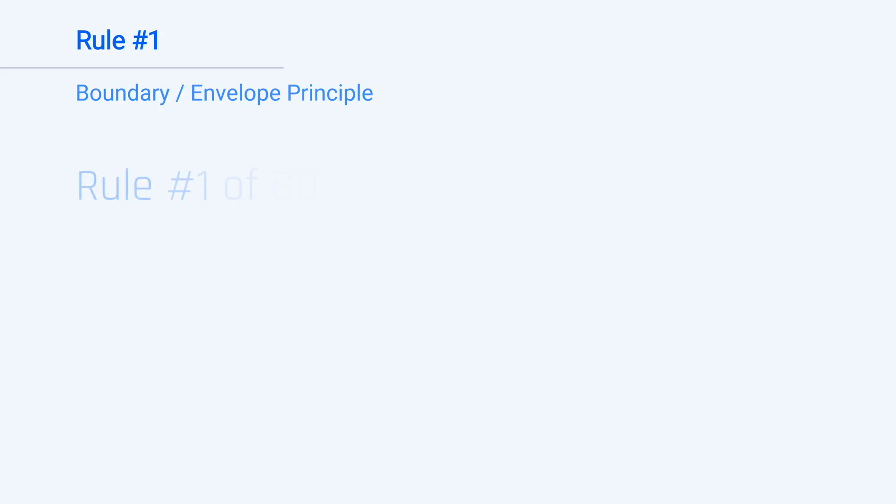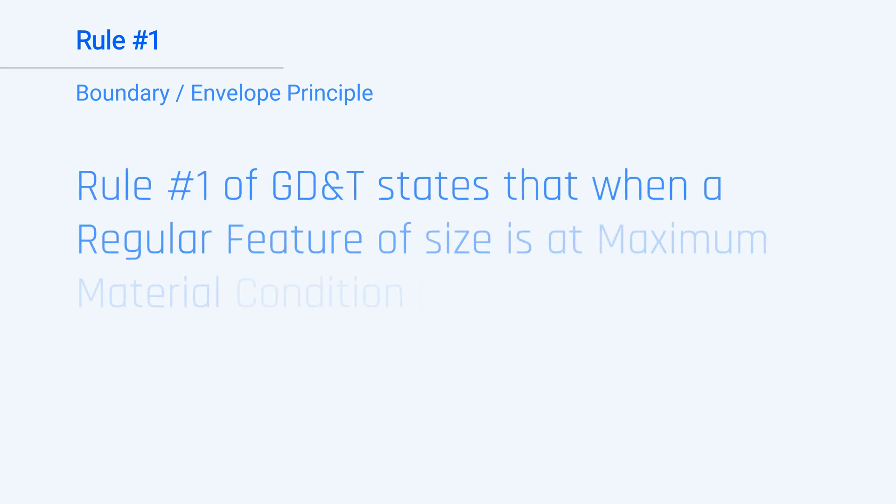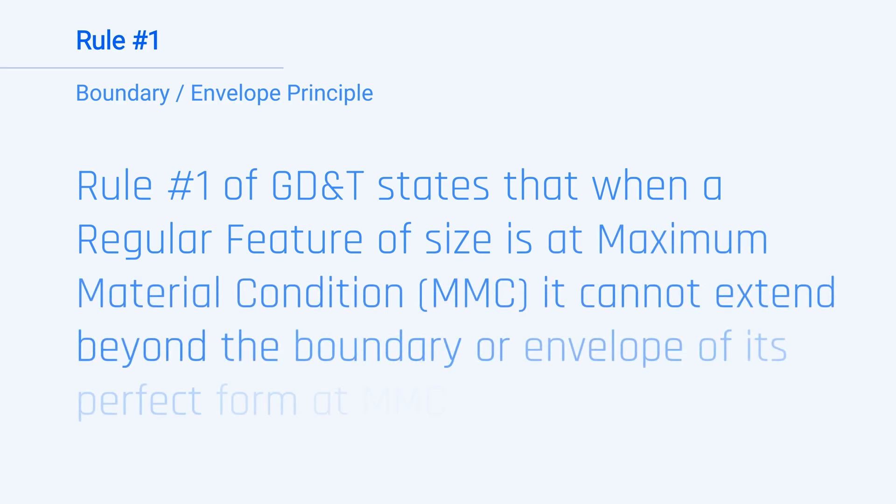Rule 1 of GD&T states that when a regular feature of size is at maximum material condition, it cannot extend beyond the boundary or envelope of its perfect form at MMC. Confused? We need to unpack this a little.